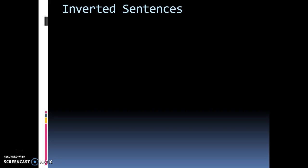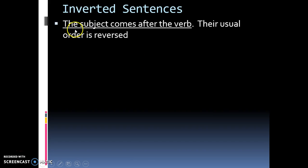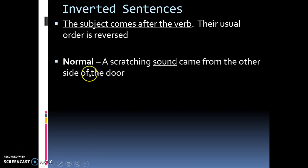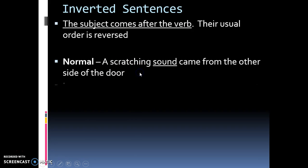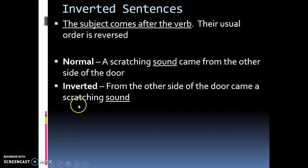Inverted sentences are the hardest, but thankfully they're not that common. They sound kind of silly — sometimes you use them to increase sentence fluency. The subject comes after the verb, and a lot of times this happens when you start a sentence with a prepositional phrase. Write down: the subject comes after the verb. A normal sentence would be "A scratching sound came from the other side of the door," but the inverted version is "From the other side of the door came a scratching sound." The verb is "came" — what came? A scratching sound, with "sound" being the most important word. Copy this inverted example into your notes.